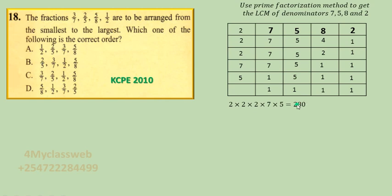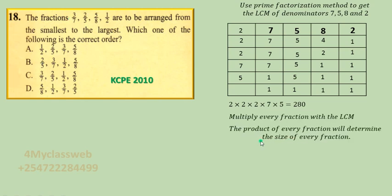Now we shall use the LCM of 280 and multiply by each of these fractions. For example, take 3 over 7 and multiply by 280: 280 divided by 7 gives 40, and 40 multiplied by 3 gives 120. So the product for 3 over 7 is 120. This product will determine the size of every fraction.